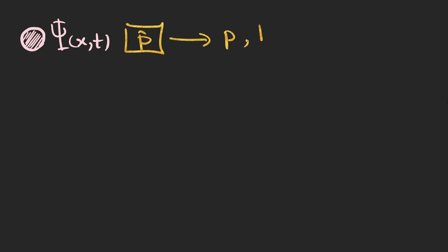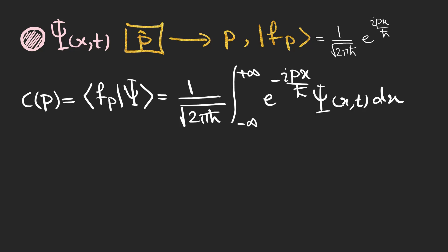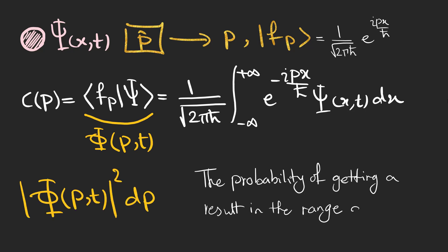But what about the probability of finding the particle at momentum p at time t if we are given the same state psi for the wave function? Again we find the expansion coefficient for the momentum operator which its square is a representation of probability of finding the particle at momentum p at time t.